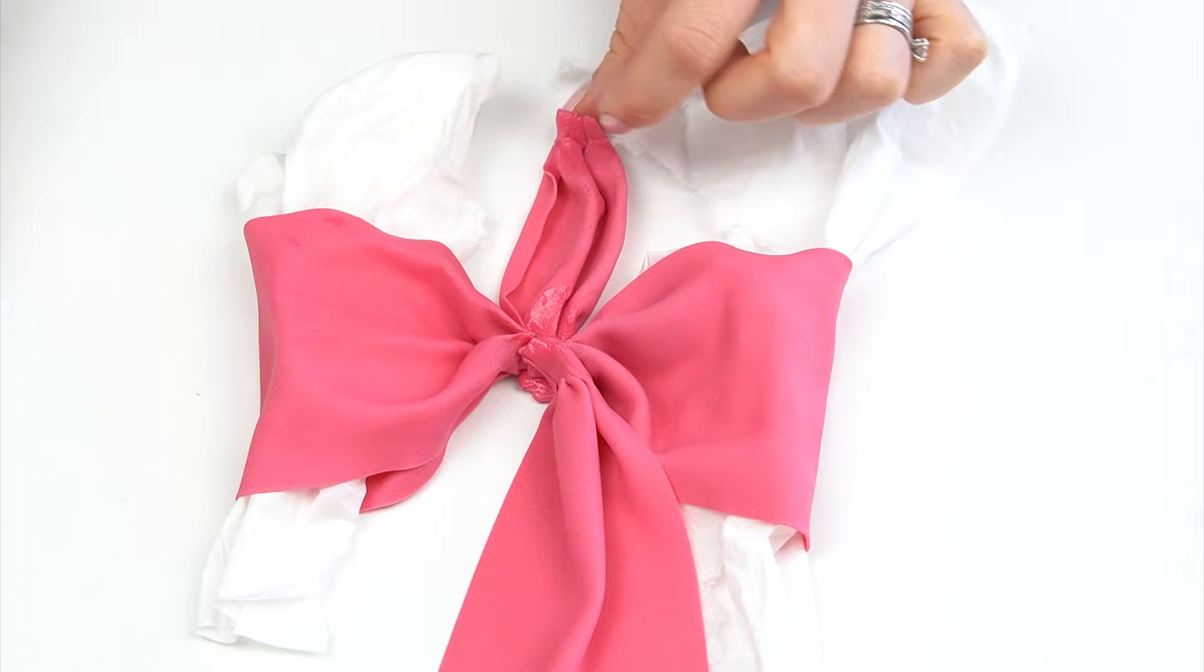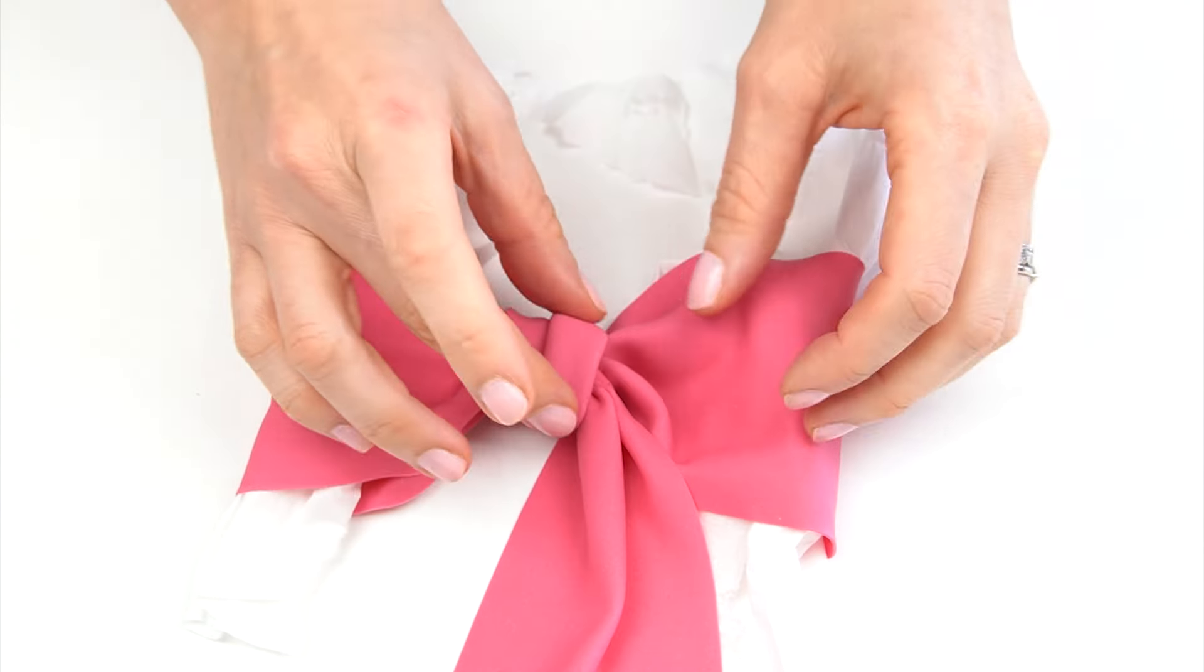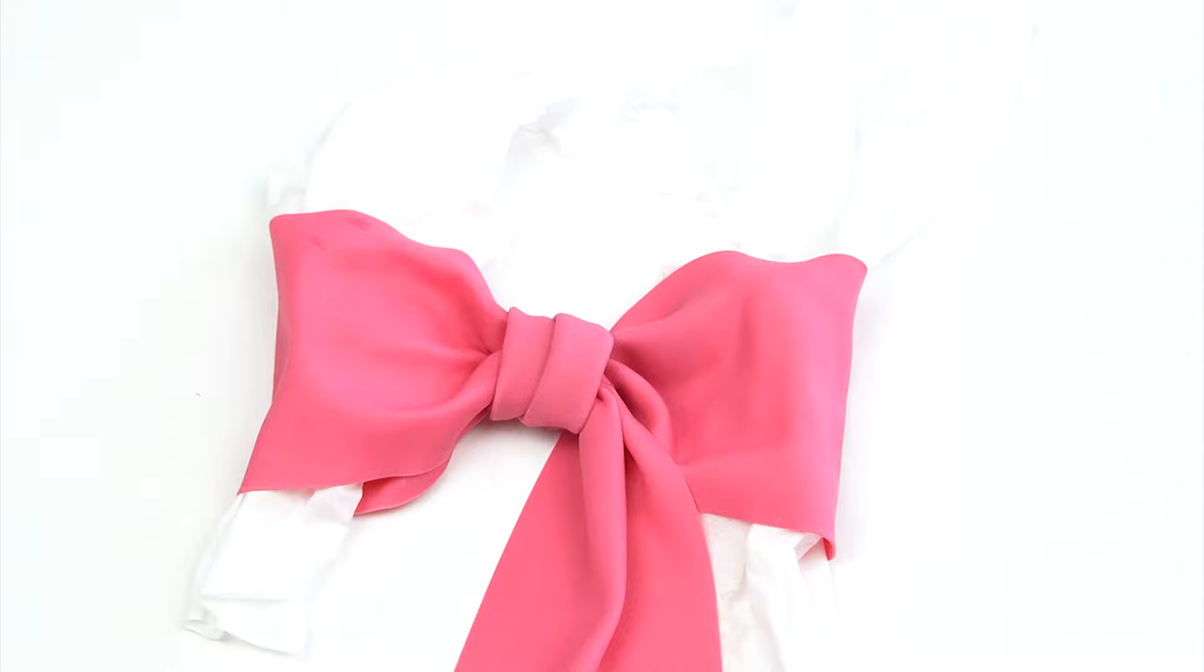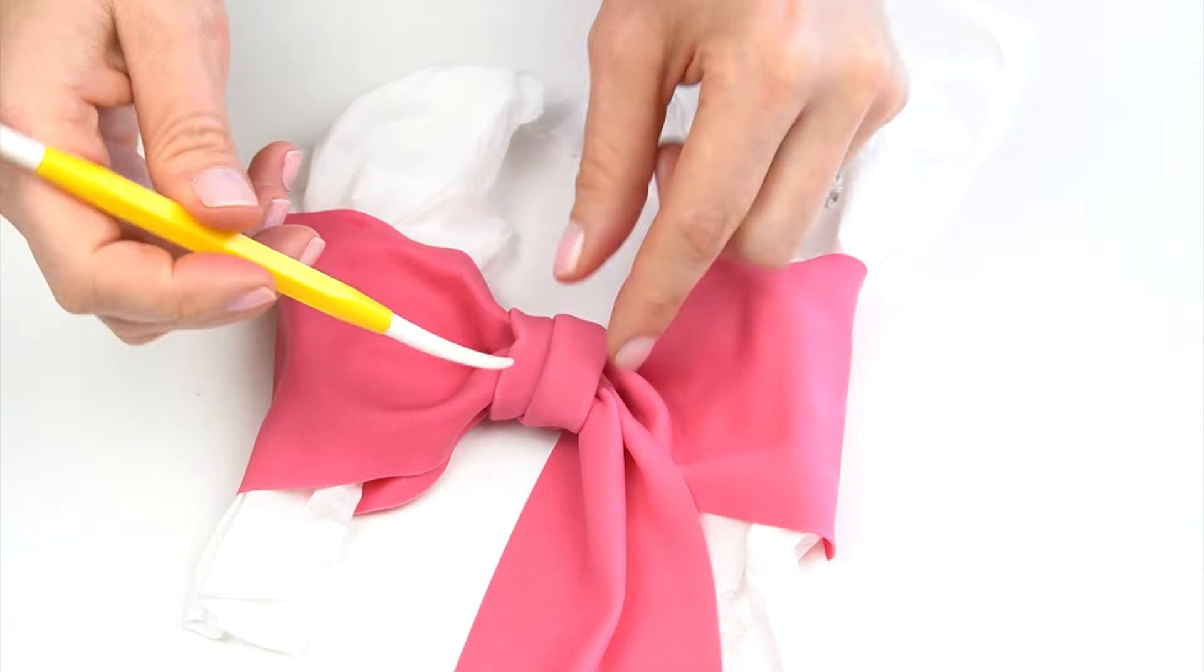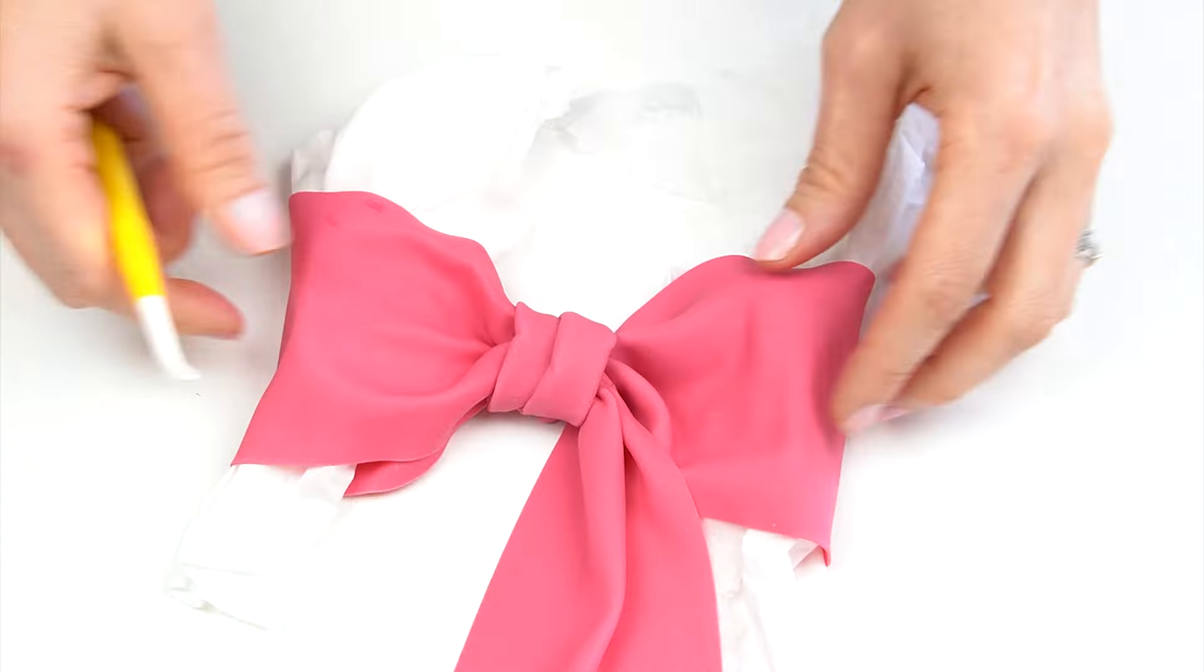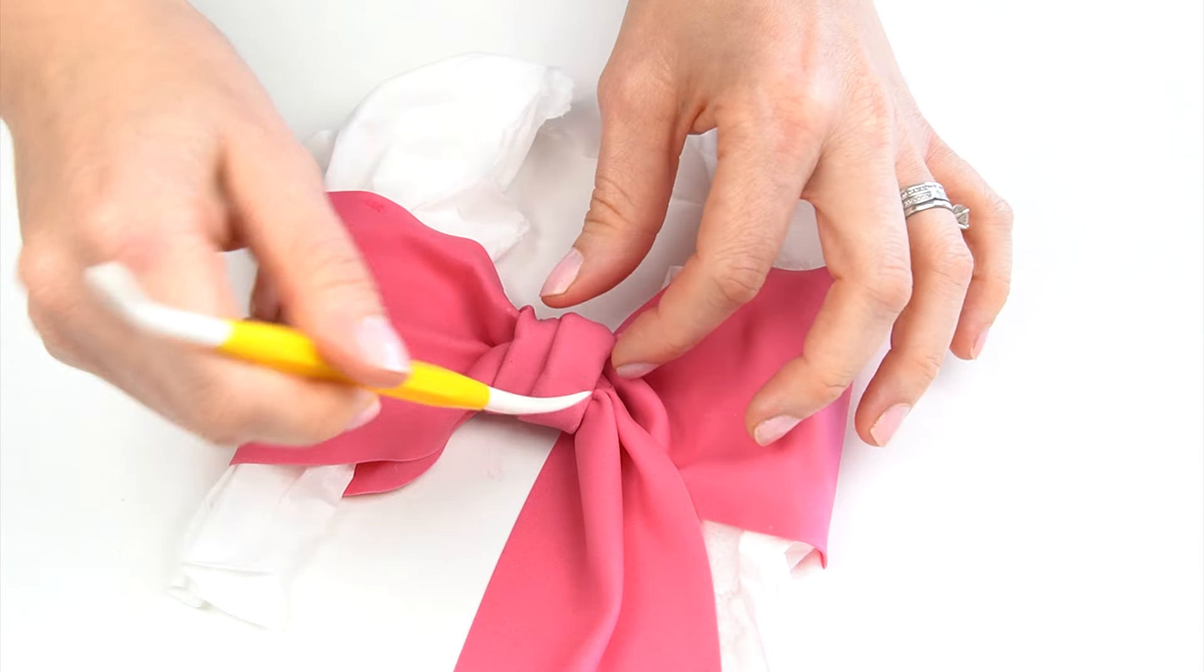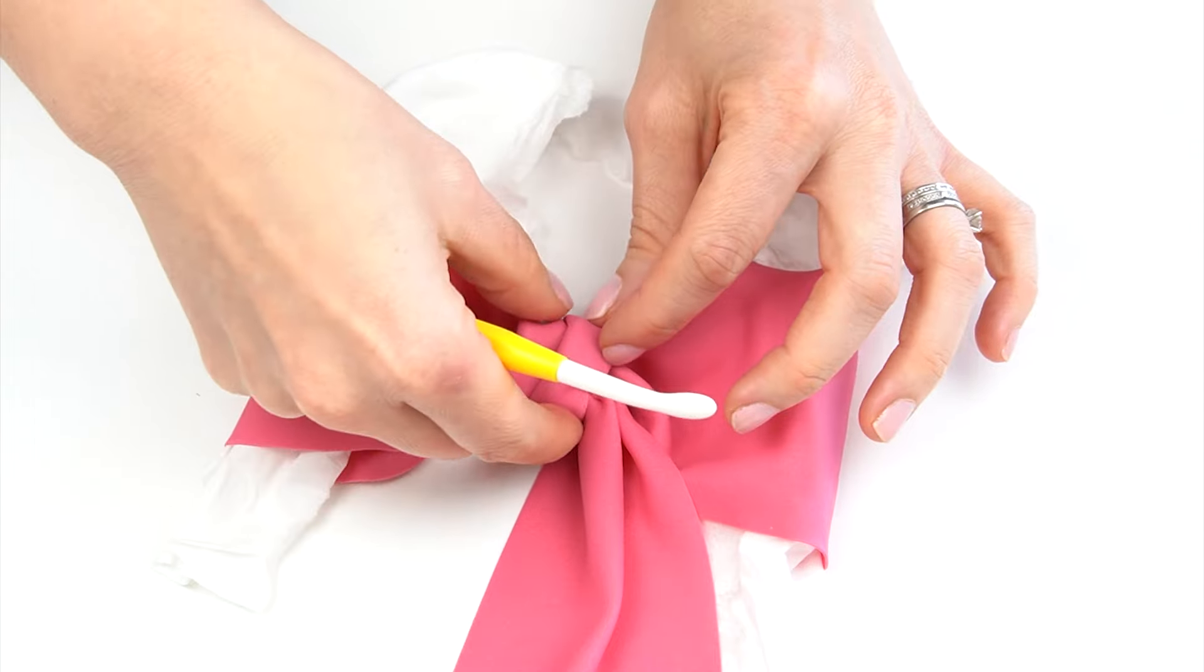I want to pull this over so that I cover all of these joints and that's going to tuck behind. You can use the end of your paintbrush or your dresden tool just to add a little bit of movement into that knot. We then want to add this onto our cake before our tail starts to dry, as we don't want it to crack.